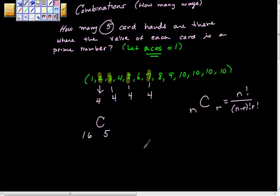So that would look something like this. It would equal 16 factorial over 16 minus 5 is 11 factorial, 5 factorial.